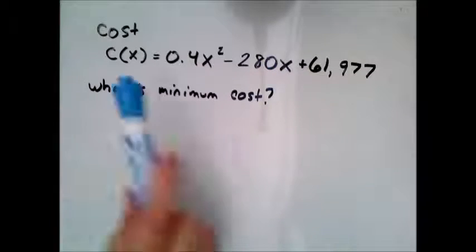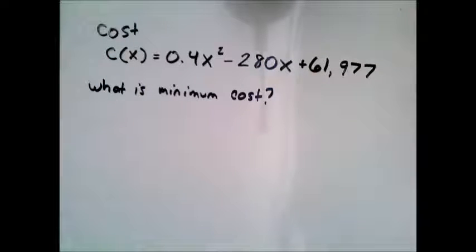Here we want to see if we can find a minimum cost. They give us this cost equation, unit cost, and notice the big thing about this is it has a squared.